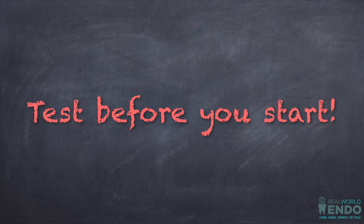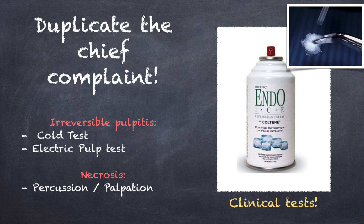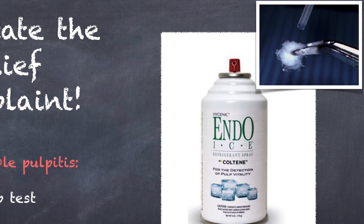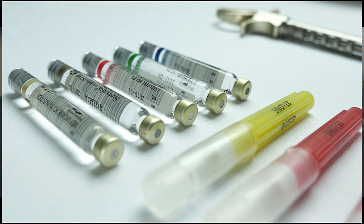That is basically how you're going to find out if the patient is numb. You could use your EPT, or easier than that, just use your cold test. After you've given enough time to your block, infiltration, or whatever type of anesthesia you're using, proceed to put some endo-ice on a cotton pellet or on a king tip, and place it directly on the tooth. Then look at the patient's feedback — what you're looking for is a patient who's not even aware that you are doing what you're doing. If the patient says, "I kind of feel that," that tooth is still not numb.